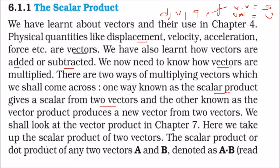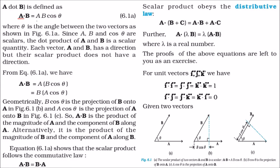The scalar product or dot product of any two vectors a and b is denoted by a·b, and simply means a·b = ab cosθ. If θ is the angle between the two vectors, then the component of b along a is b cosθ. So a·b = a(b cosθ). Alternatively, the component of a along b is a cosθ, giving a·b = b(a cosθ). Thus a·b = ab cosθ represents the projection of one vector onto the other.